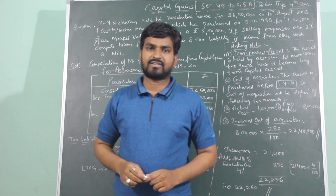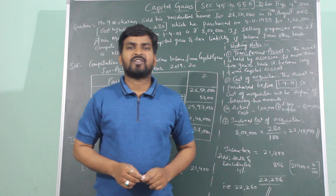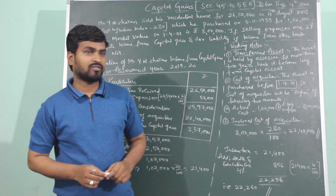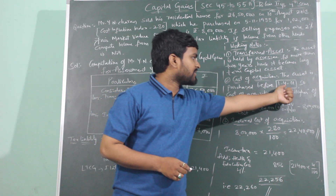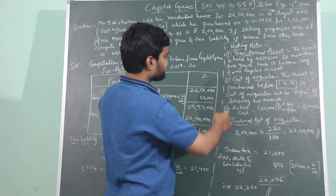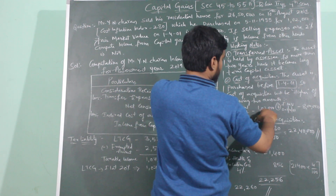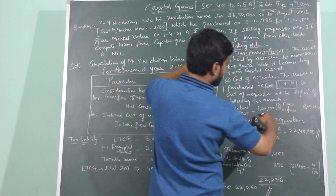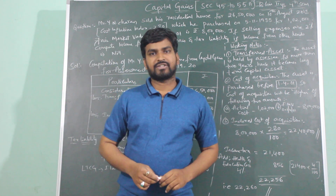The asset was purchased before 1st April 2001. When the asset has been purchased before 2001, the cost of acquisition will be taken as the higher of the following two amounts: (1) actual cost, which is 1,02,000, and (2) fair market value on 1st April 2001, which is 8,00,000. We will be discussing this while we calculate the indexed cost of acquisition.